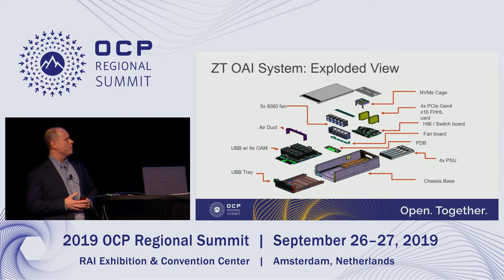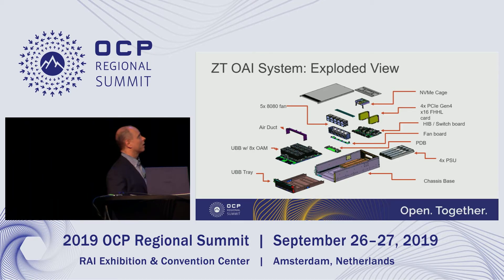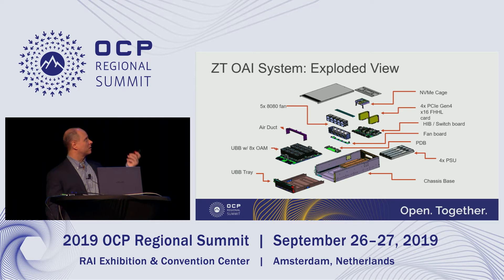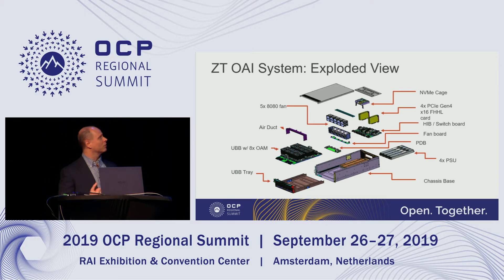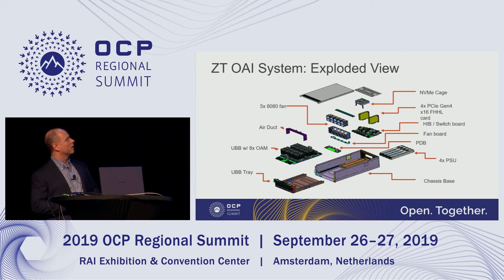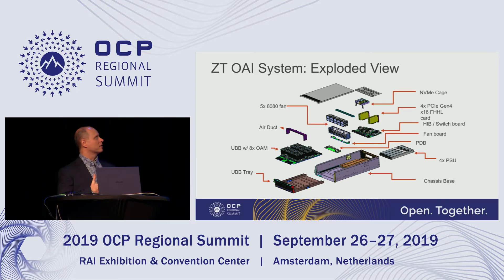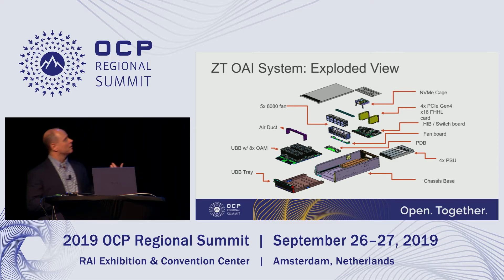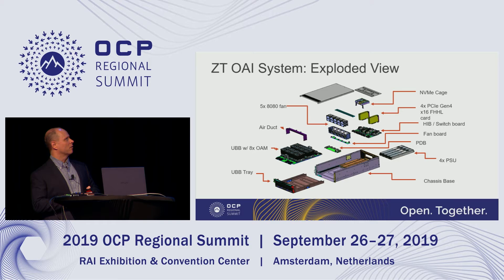This is an exploded view showing all elements of the system. We have the UBB with the eight accelerator modules — all of those fit on a UBB tray, and the UBB tray slides out from the chassis base. The host interface board plugs in on the same level as the UBB board. We have a fan board that supports the fans with fan control, and then the four 3-kilowatt power supplies that fit in the bottom 1U of the chassis.